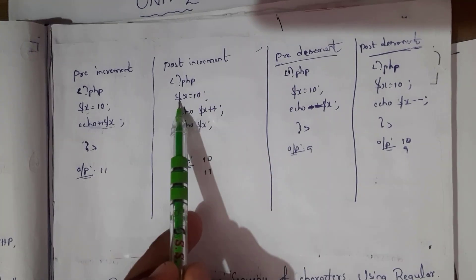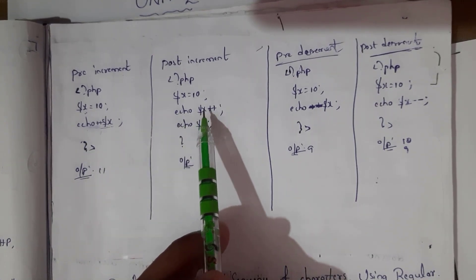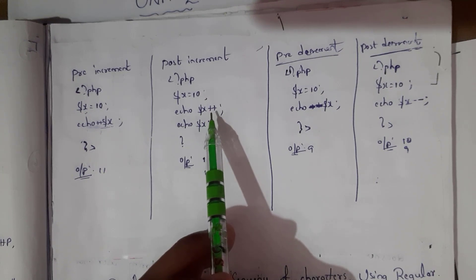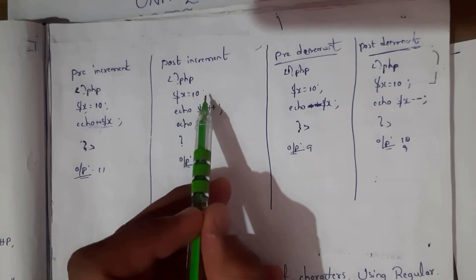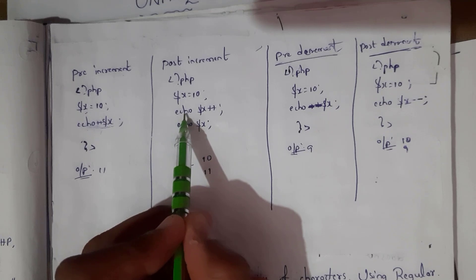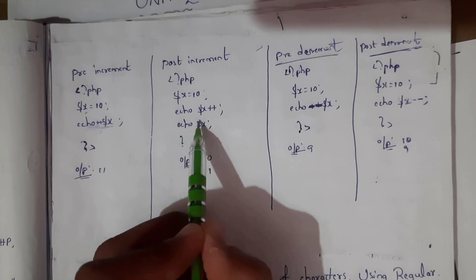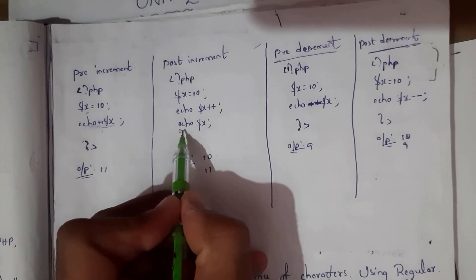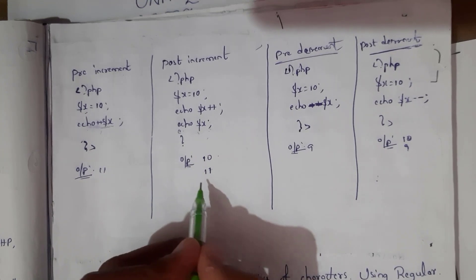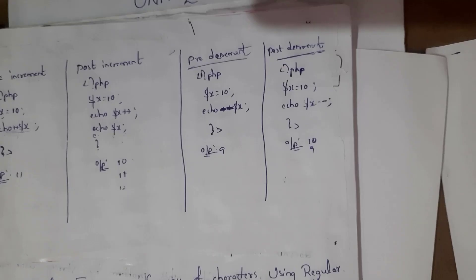For post-increment: '$x = 10', then 'echo $x++' — post-increment means it first generates the same value (10), and then increments. So the first echo gives 10, the next echo gives 11, and the next gives 12. Post-increment generates the current value first and increments afterward.